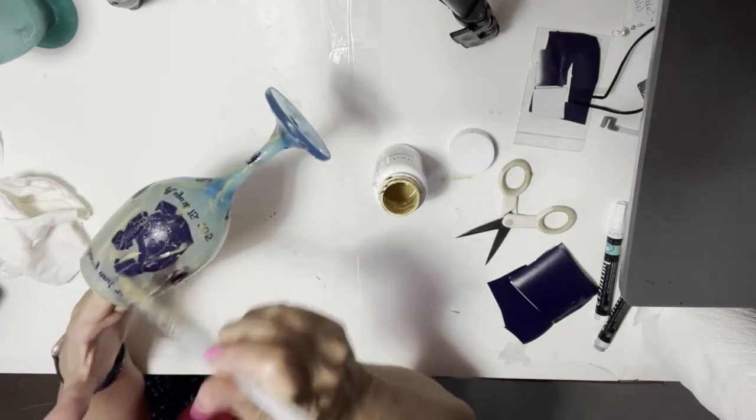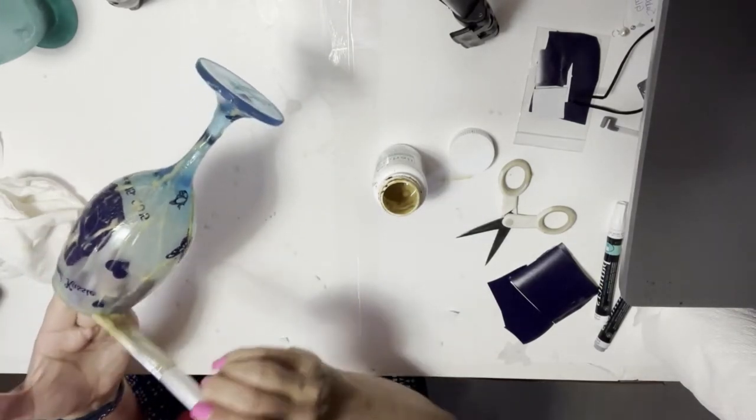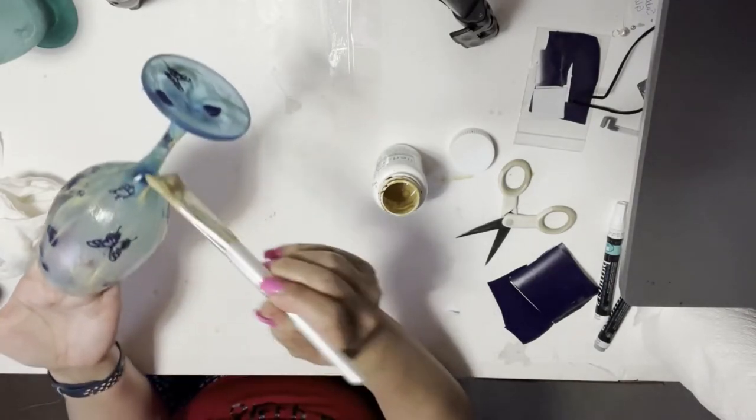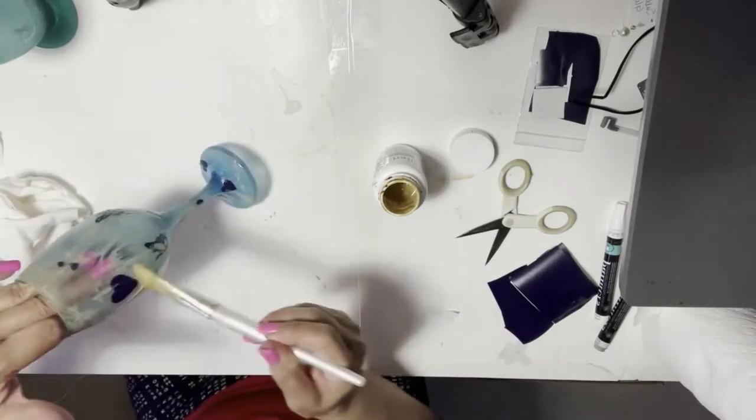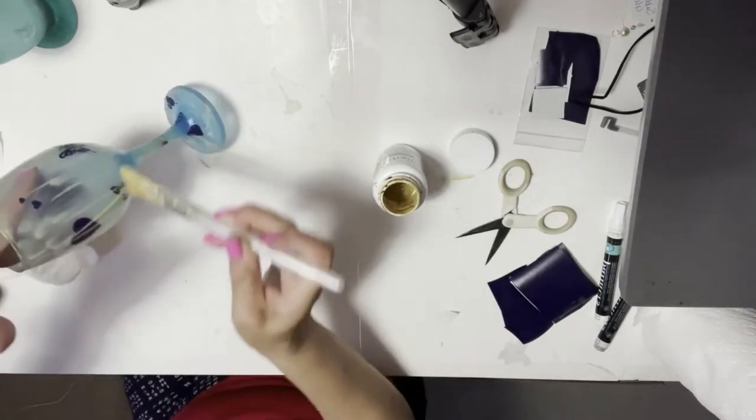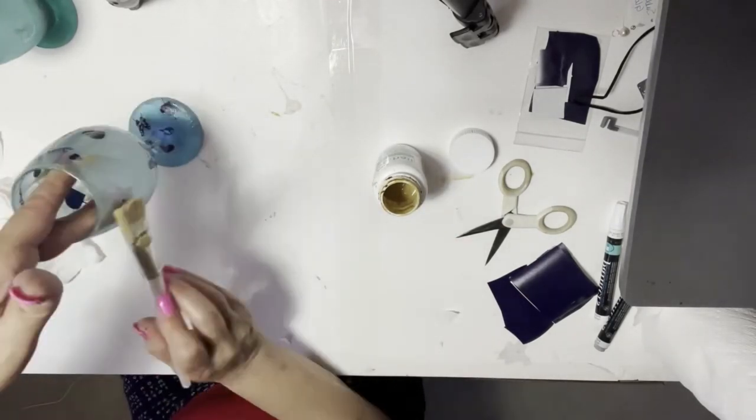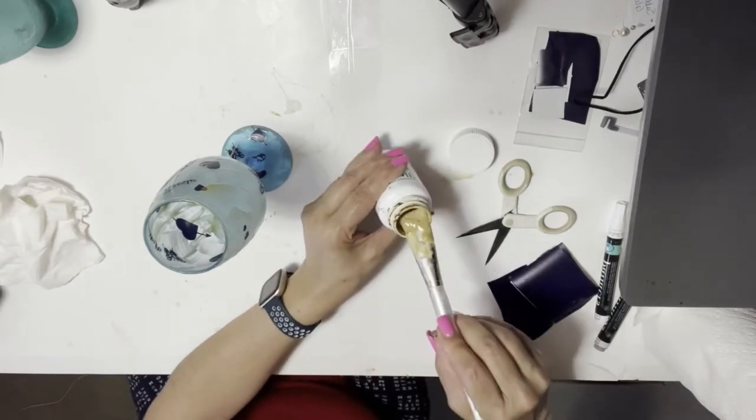We're going to spend about two minutes just moving the etching around back and forth to make sure the whole thing gets it. I'm going to put this one back because we can reuse it. Cover this and we're going to wait another five minutes.